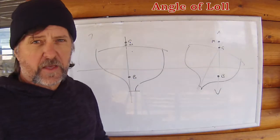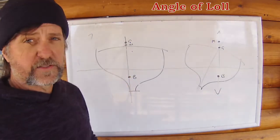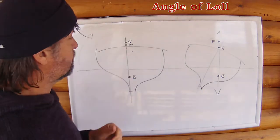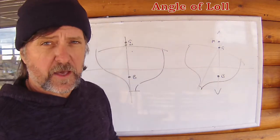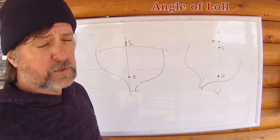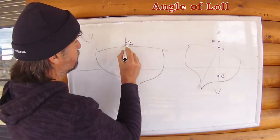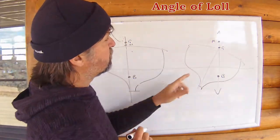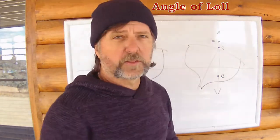So a ship before the angle of loll is going to be unstable in the upright position. We can see that from this diagram. She will achieve stability at the angle of loll, and the diagram looks like this. Metacenter has moved up above G and slightly off the centerline to bring them all into alignment.